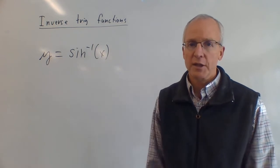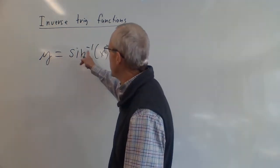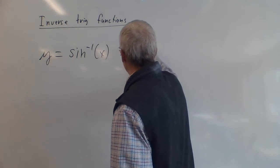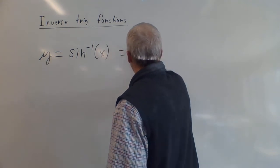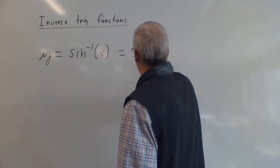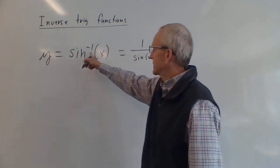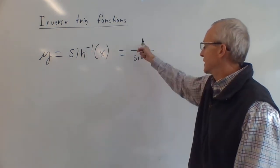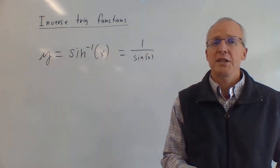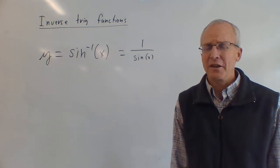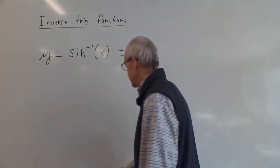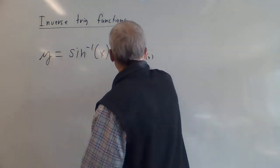The inverse trig function — some people call it arcsin, which is probably better than the negative one notation, because remember this is not equal to one over the sine of x. It means it's an inverse function, not a reciprocal. It's bad notation; calling it arcsin or arcsine would be better. Just make sure you keep that separate.